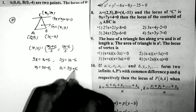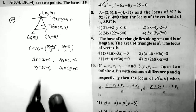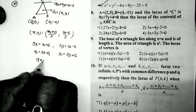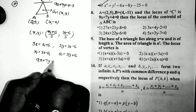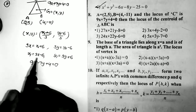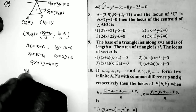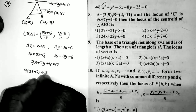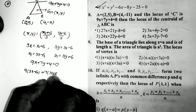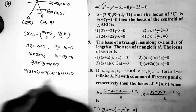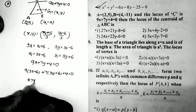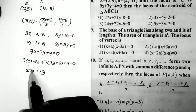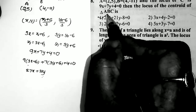Now replacing these two values in the locus equation of C, which is 9x + 7y + 4 = 0: we get 9(3x - 6) + 7(3y + 6) + 4 = 0. This simplifies to 27x + 21y, which matches the first option — that is the correct answer.